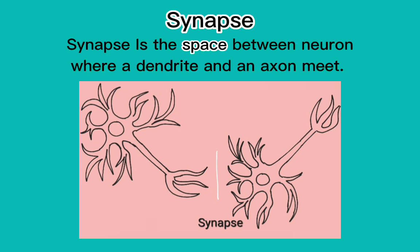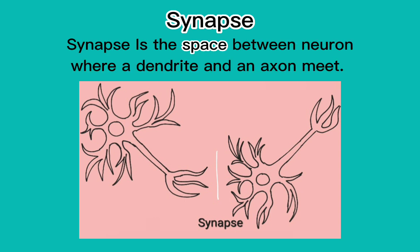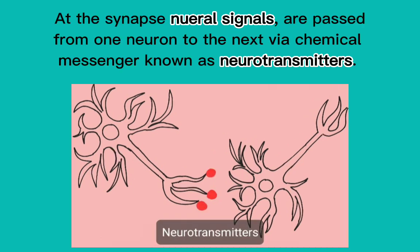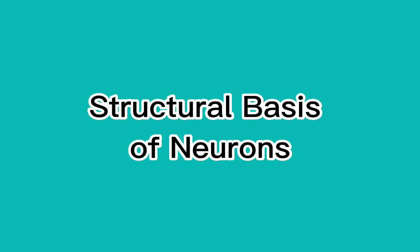A synapse is the space between neurons where a dendrite and an axon meet. At the synapse, neural signals are passed from one neuron to the next via chemical messengers known as neurotransmitters.